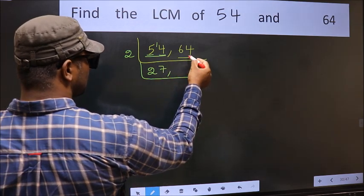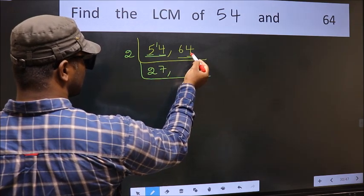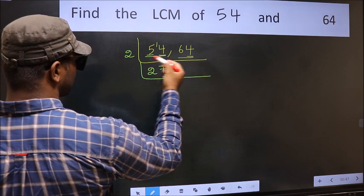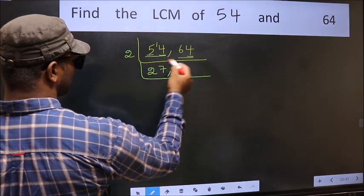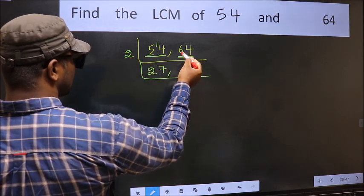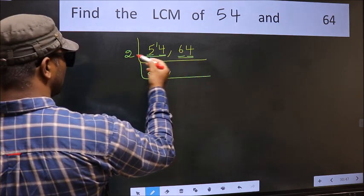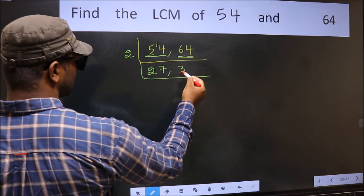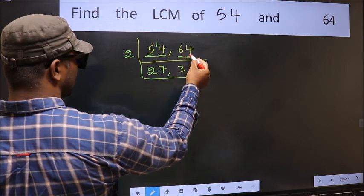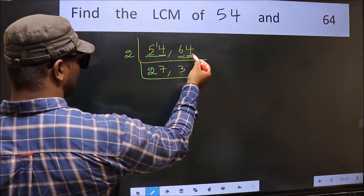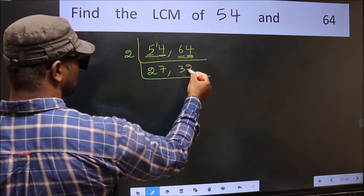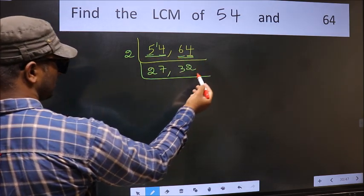The other number, 64: last digit is 4, which is even, so it is divisible by 2. First digit 6 — we get 6 in the 2 times table at 2 threes = 6. The next digit 4 — we get 4 in the 2 times table at 2 twos = 4. So 64 divided by 2 gives 32.